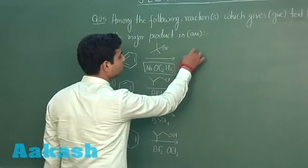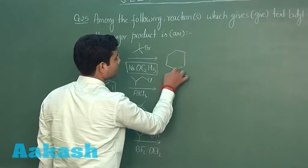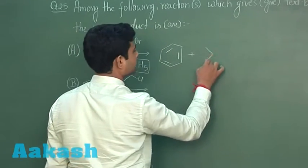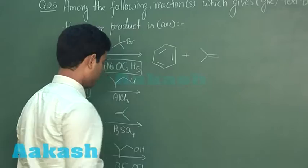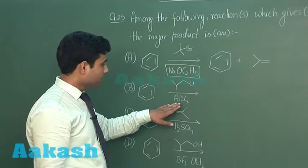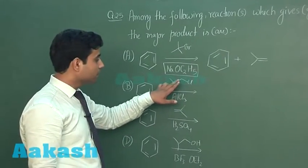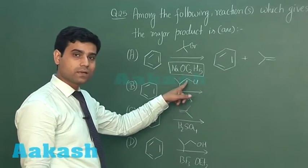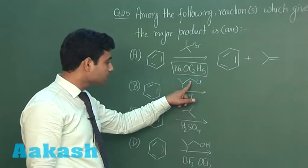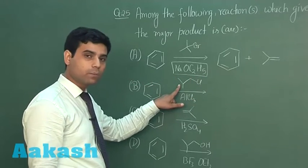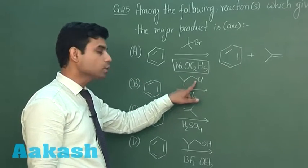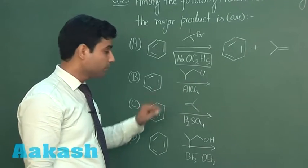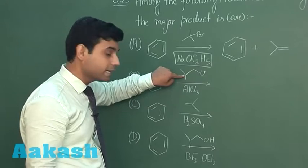Therefore, the products are benzene and the elimination product. In the second case, we have AlCl3. AlCl3 will result in the formation of a carbocation at the primary position. The primary carbocation is unstable compared to a tertiary carbocation, so a 1,2 hydride shift will take place, resulting in the formation of a carbocation at the tertiary position.